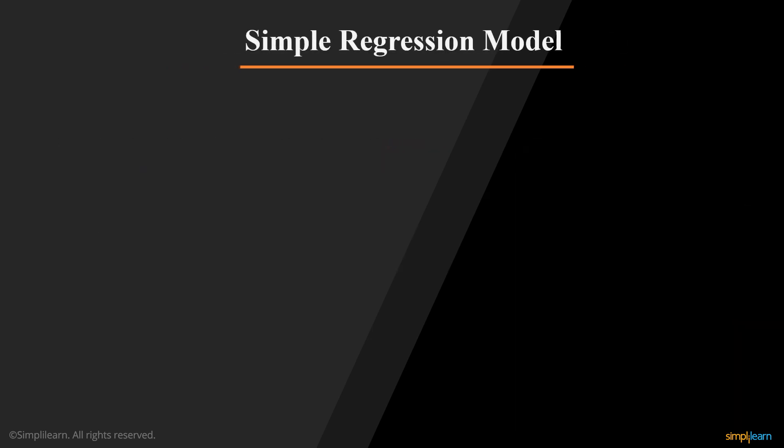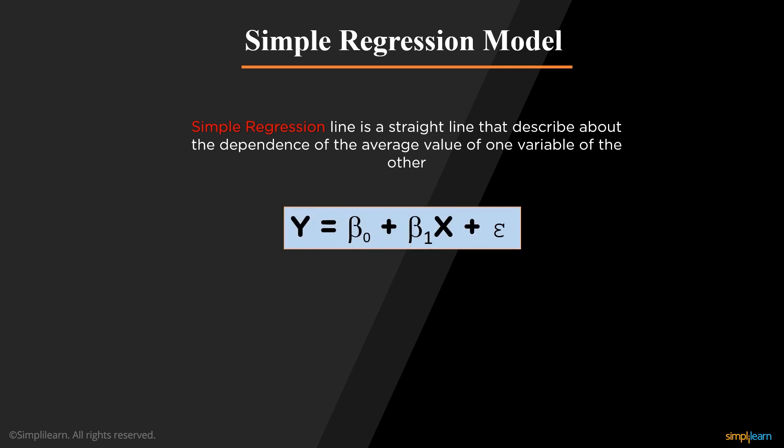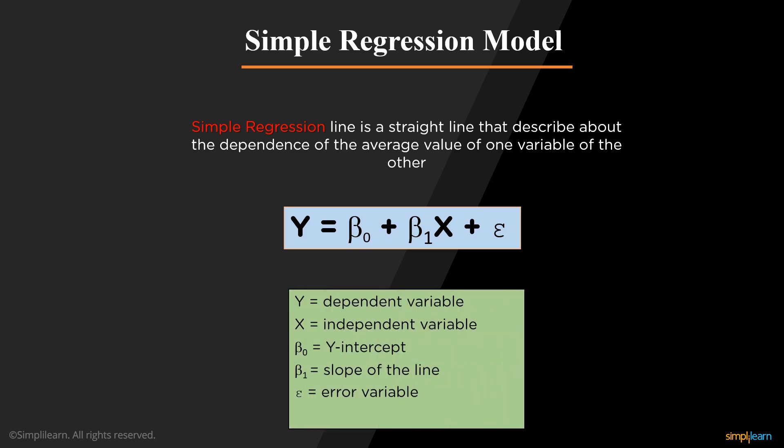Now, let's discuss a simple regression model. A simple regression model is used to depict a relationship between variables which are proportional to each other, meaning the dependent variable increases or decreases with the independent variable. The equation of a simple regression model is y equals b0 plus b1 x plus e, where y is dependent variable, x is independent variable, b0 and b1 represents y-intercept and the slope of the line respectively, and e is the error variable.